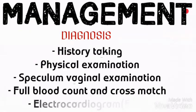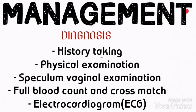Management of PPH — Diagnosis. History taken will show the time of labor, duration, progress, and finally placenta delivery. A quick physical examination from head to toe is done in order to exclude pallor and ascites, which is generalized edema. We can also do a speculum vaginal examination which will reveal trauma to the genital tract. We can do FBC and cross-matching which will determine hemoglobin level, blood group, and preparation for blood transfusion. We can also do ECG to know the conduction of the cardiac muscle.